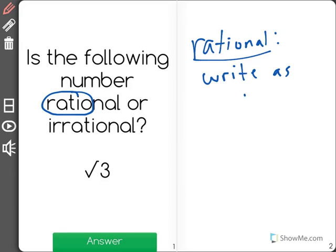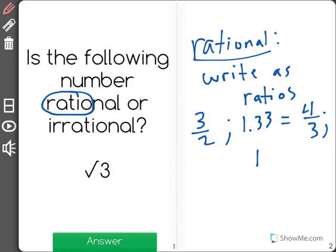Remember a ratio is like a fraction. For example, 3 halves is rational. We could write the number 1.33 as rational, that would be 4 thirds. 17 is rational because we could write it as 17 over 1.